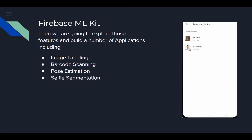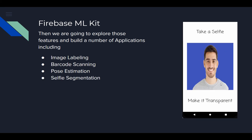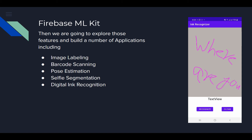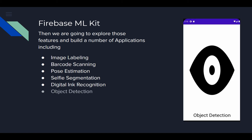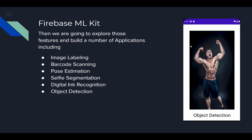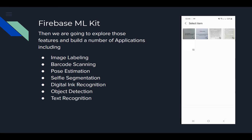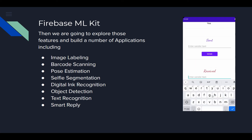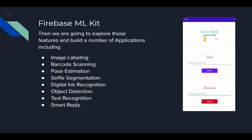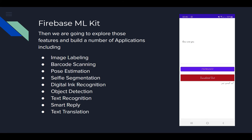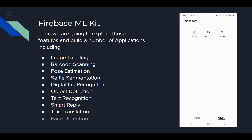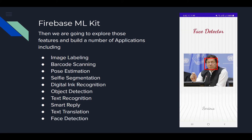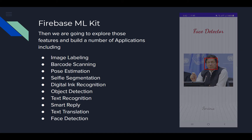We'll also build selfie segmentation to make selfies transparent, digital ink recognition to recognize handwritten text, object detection to detect objects with their location, text recognition to recognize text in images and documents, smart reply to add auto-reply suggestions in chat applications, and text translation to translate between different languages, as well as face detection to detect human faces and other facial landmarks.